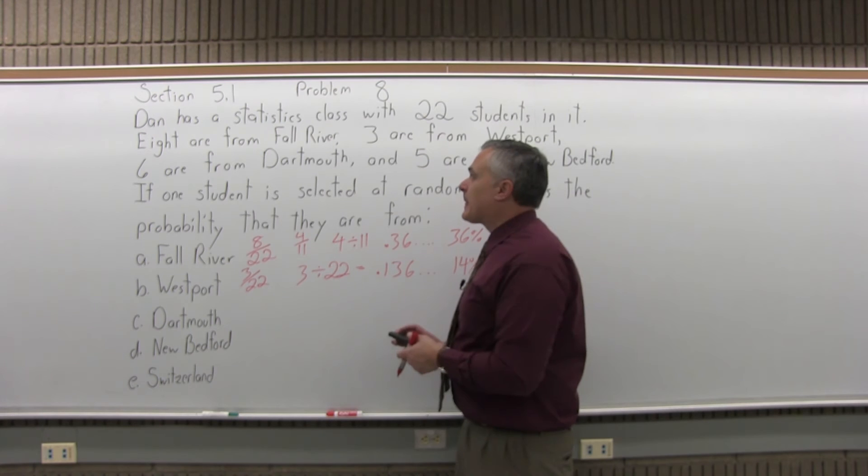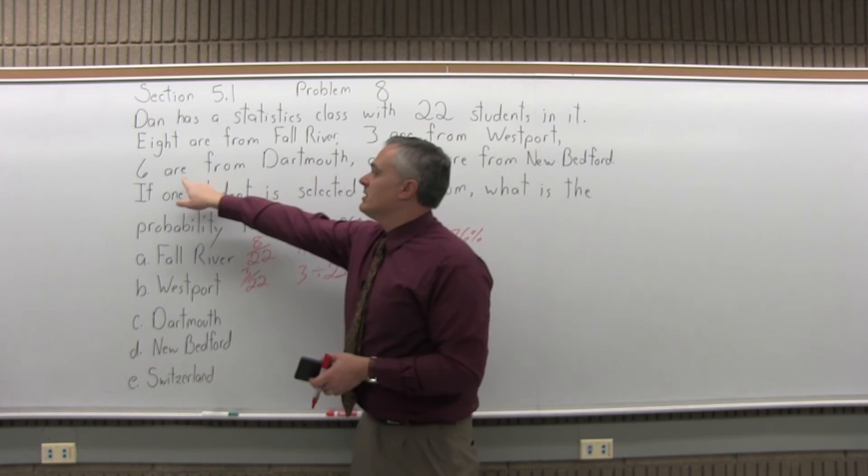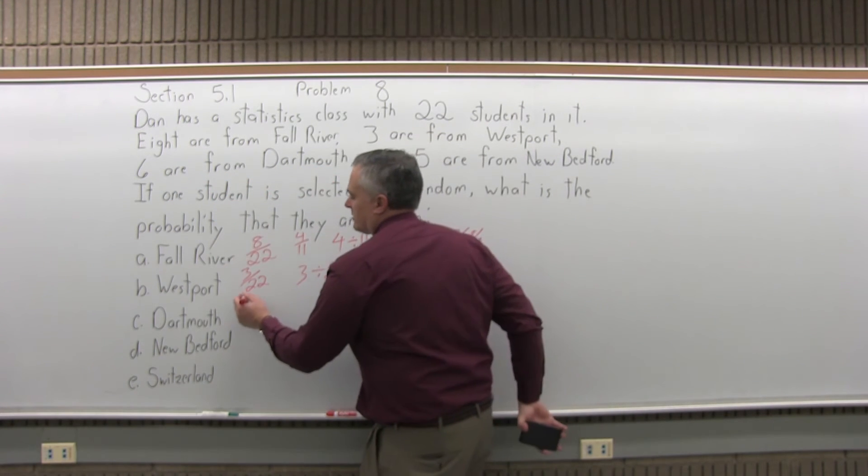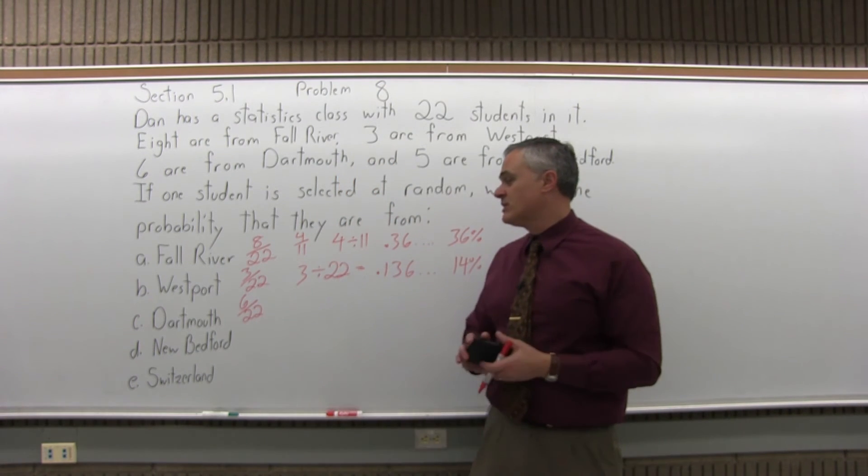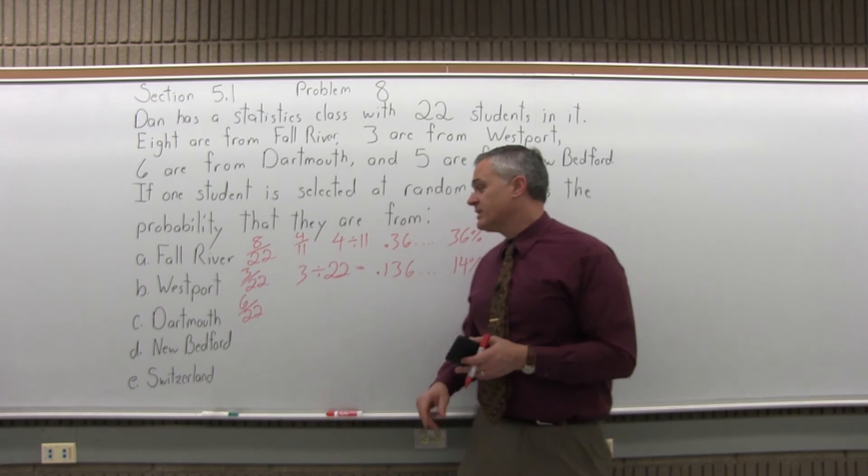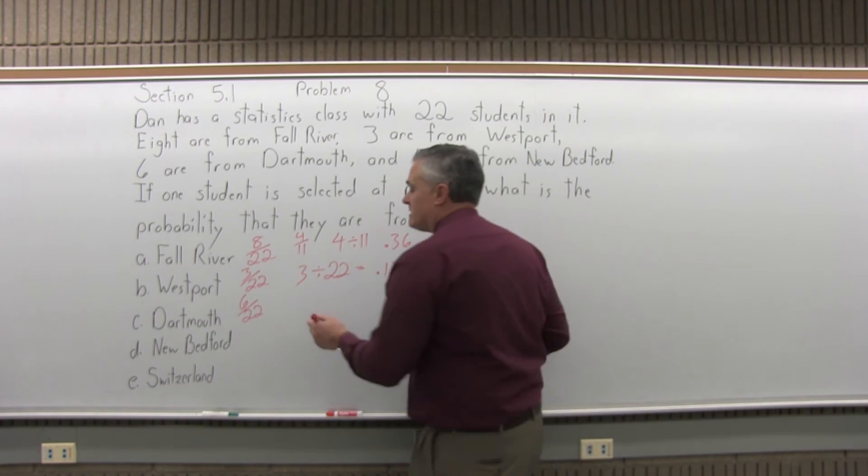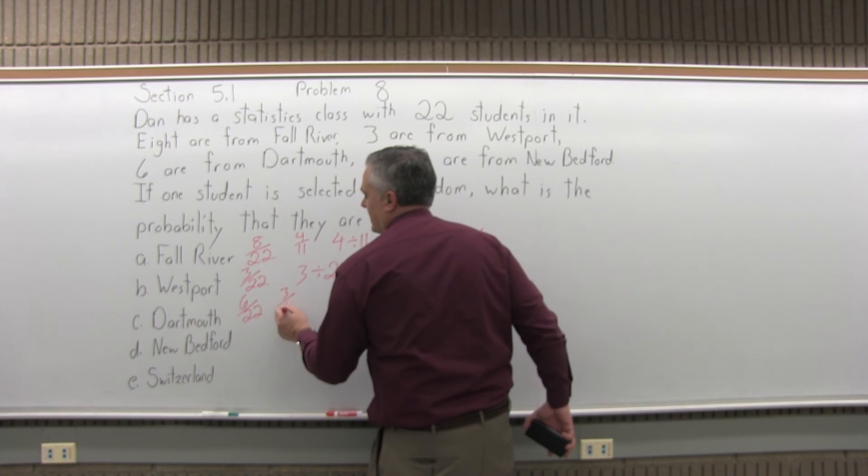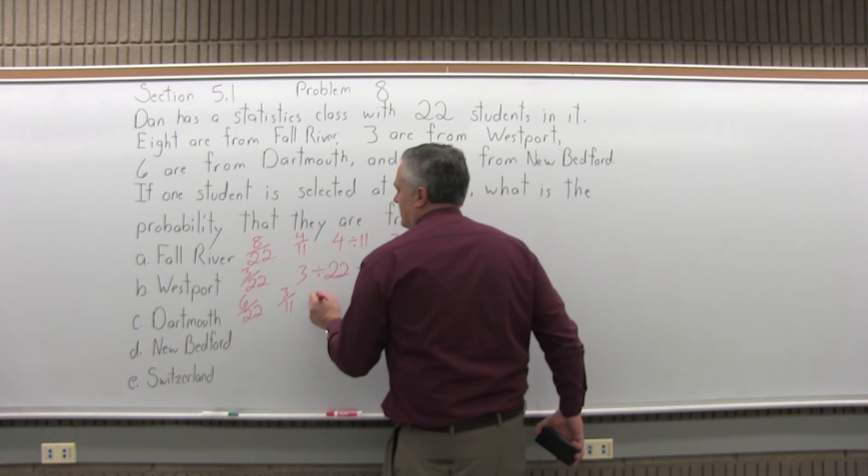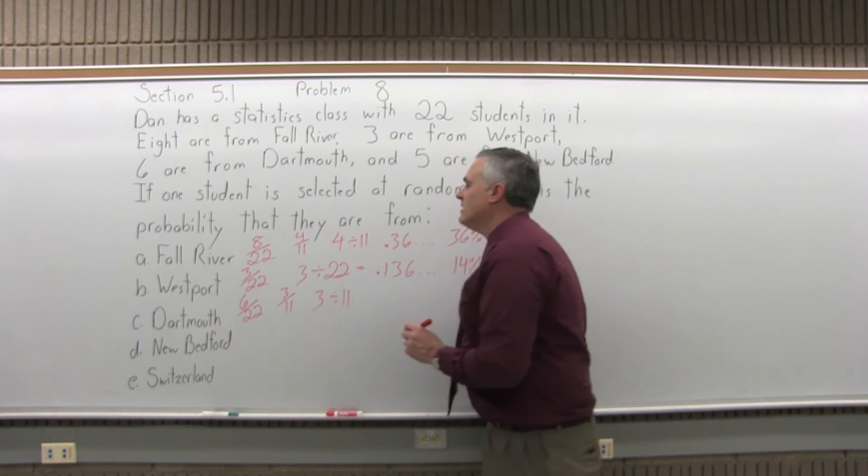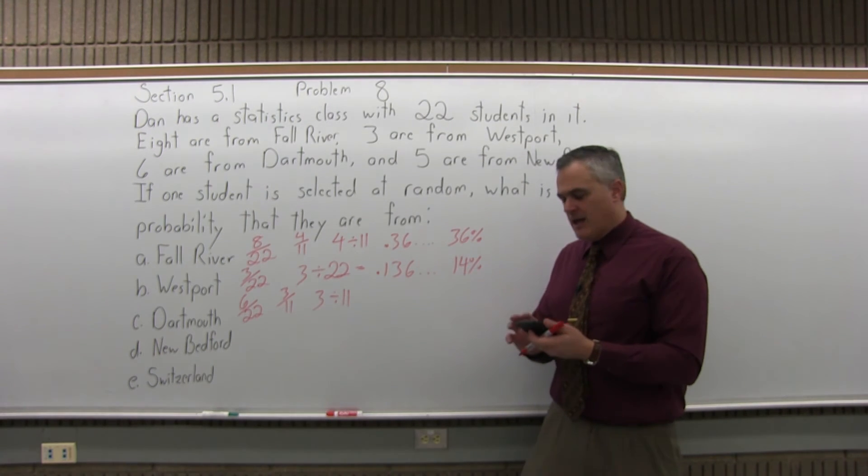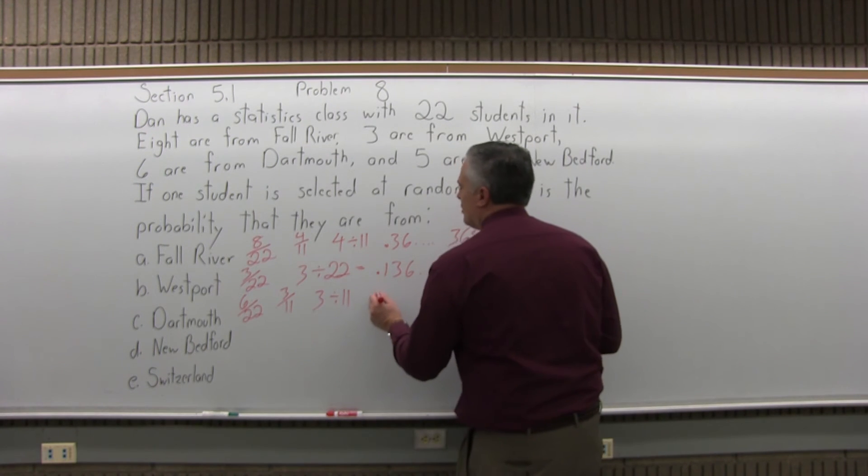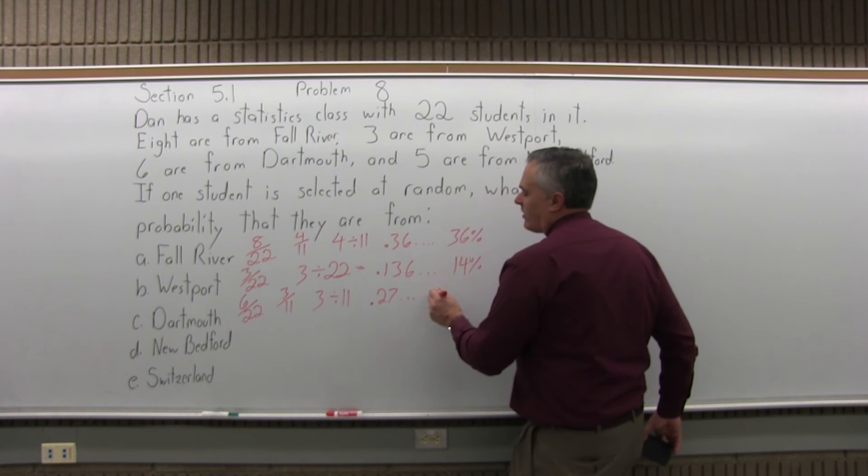Dartmouth. Well, six students are from Dartmouth. So it would be 6 over 22. The probability that one randomly selected student would be from Dartmouth would be 6 over 22, because there are 6 from Dartmouth out of 22 altogether. Now that can reduce if you like. Half of 6 is 3, half of 22 is 11. And again, you could get a decimal equivalent by doing 3 divided by 11. And it is .27272727 forever. Or as a percent, about 27%.